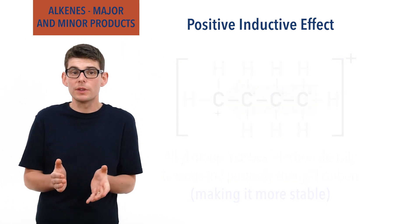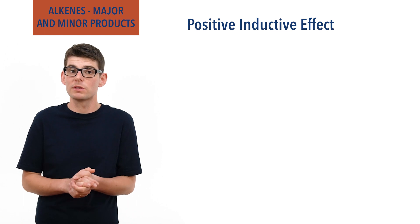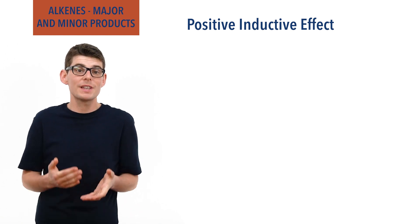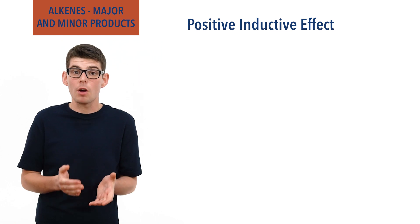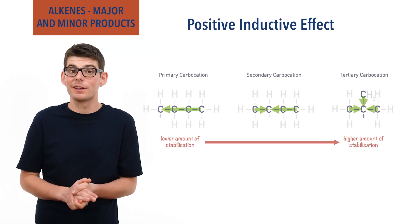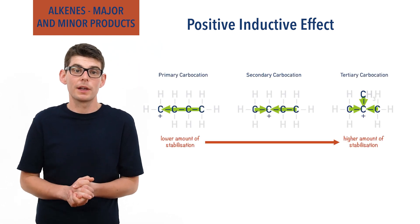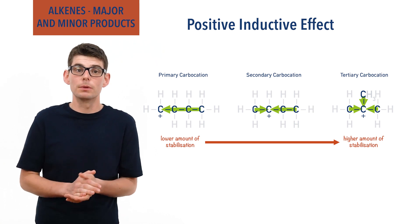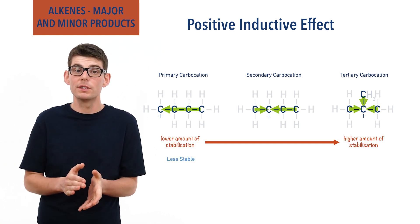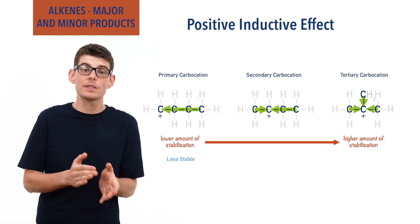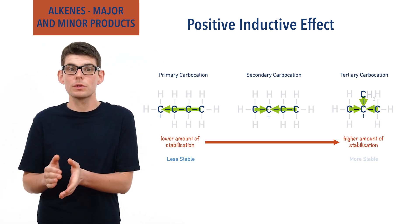It is just that this positive charge is now spread out a little bit across the whole carbocation, making it more stable. Because of this, the more carbon groups there are bonded to a positively charged carbon, the more stable the carbocation is. Primary carbocations have less inductive effect than secondary carbocations, making them less stable. And tertiary carbocations have more inductive effect than secondary carbocations, making them even more stable.